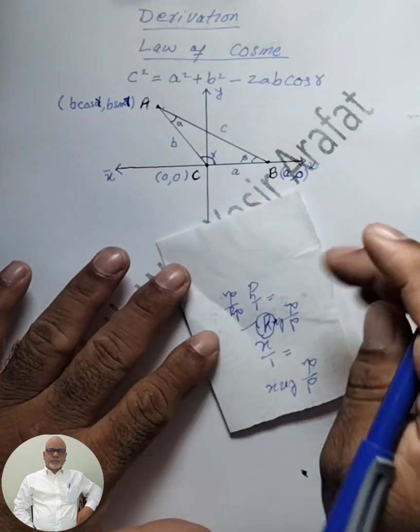So here we have the coordinates of A and B. The coordinates of A are (b cos gamma, b sin gamma) and the coordinates of B are (a, 0). We have to find the distance between A and B using the distance formula: AB equals the square root of (x2 minus x1) squared plus (y2 minus y1) squared.